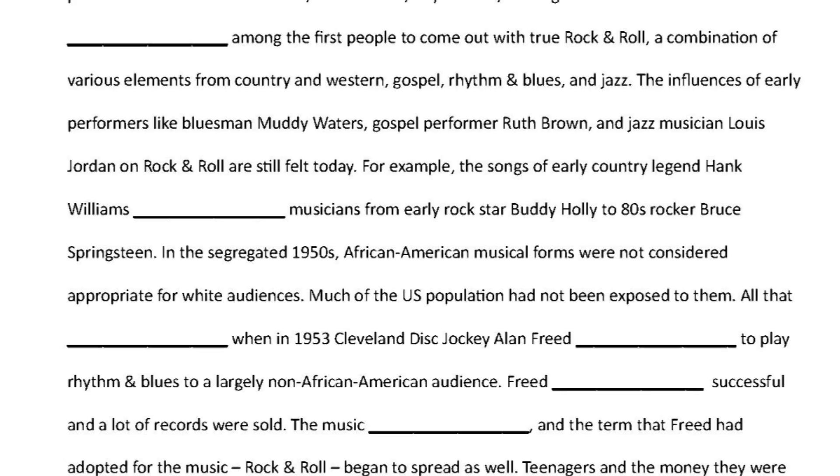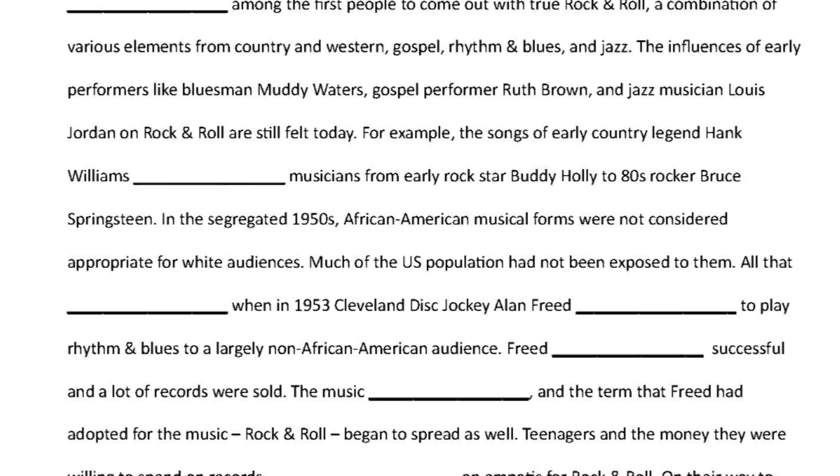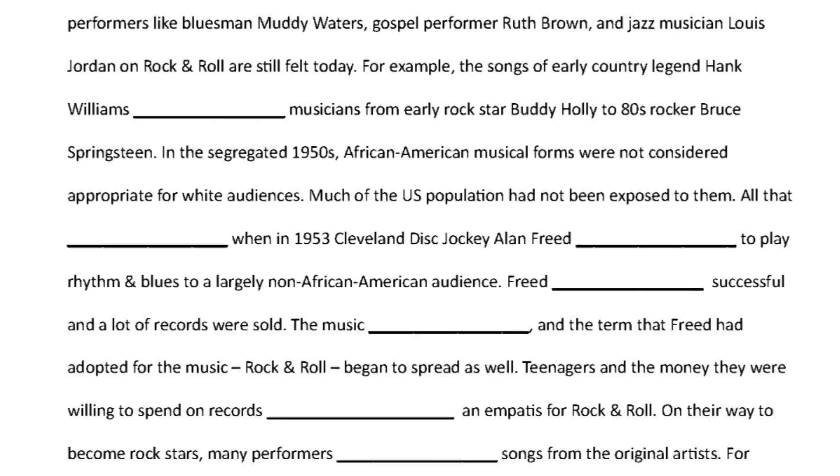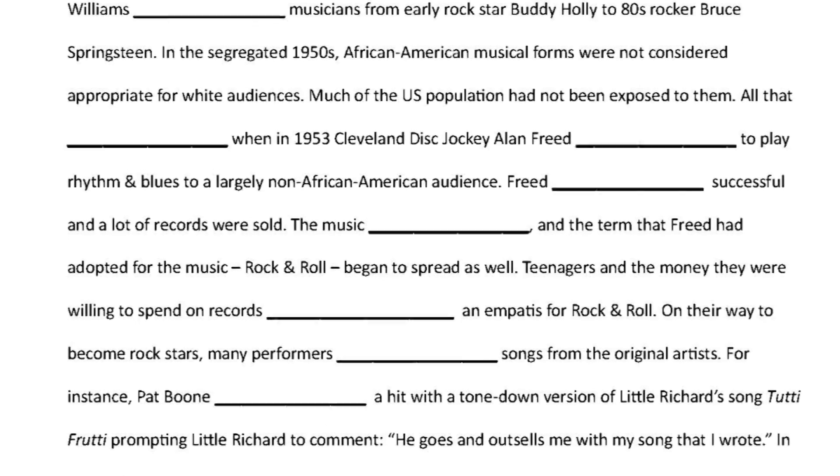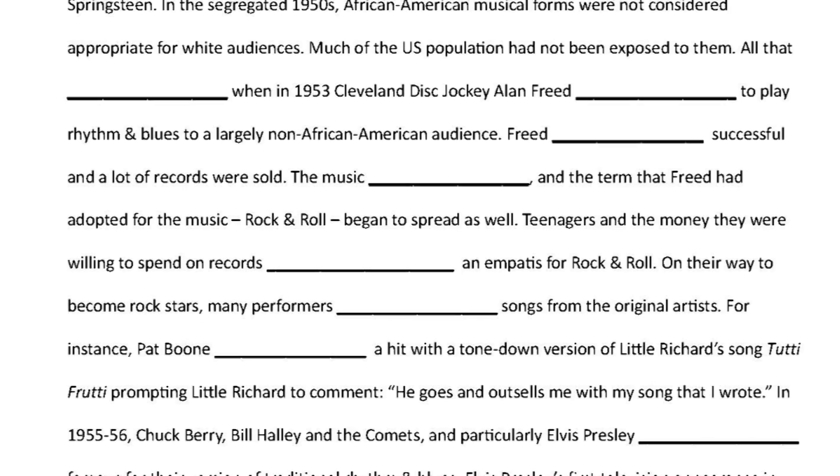For example, the songs of early country legend Hank Williams affected musicians from early rock star Buddy Holly to 80s rocker Bruce Springsteen. In the segregated 1950s, African-American musical forms were not considered appropriate for white audiences. Much of the U.S. population had not been exposed to them. All that changed when, in 1953, Cleveland disc jockey Alan Freed began to play rhythm and blues to a largely non-African-American audience. Freed was successful, and a lot of records were sold.